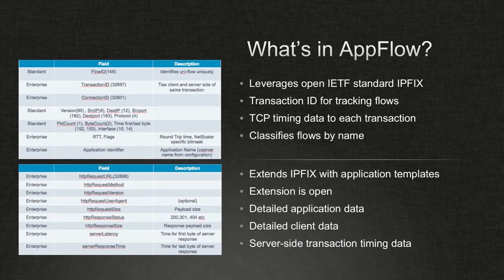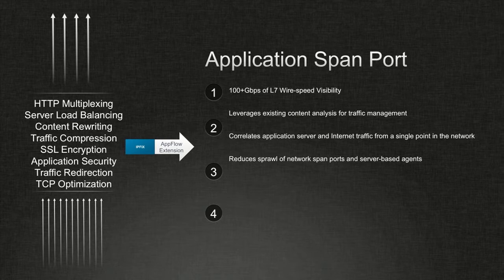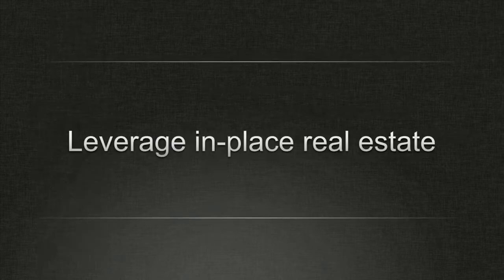In addition to that, you actually get true L7 information at the user level — whether a page has been loaded, transaction-level information, and so forth. You can do that not just for HTTP or SIP, but also any protocol. The key difference is that you're leveraging in-place infrastructure architected for high-speed processing at 100 gigs or more to generate this level of visibility. That's the first difference — you're no longer being intrusive.